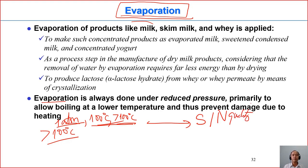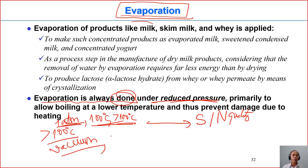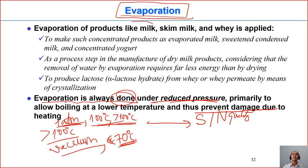At high temperature for a long time, the product will be negatively impacted. That is why evaporation is always done under reduced pressure — under low pressure or under vacuum — lower pressure compared to atmospheric pressure. We lower the boiling point so that, for example, water can be removed at 45 to 70°C. By lowering the pressure, we lower the boiling point and prevent damage due to high heating.